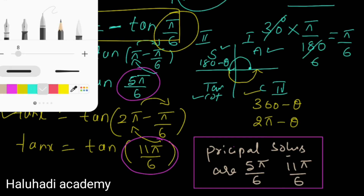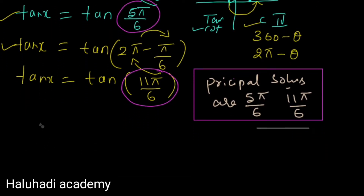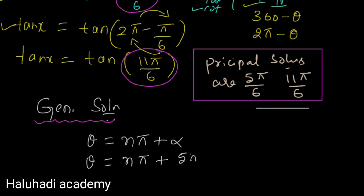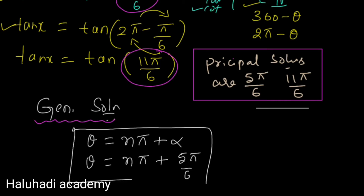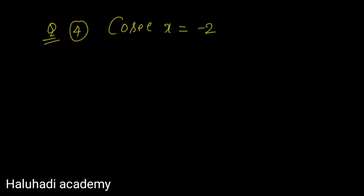Now we find the general solution. For the tan function, the formula is theta equals n*pi plus alpha. Here alpha is the principal solution value. Among the principal solutions we take the smaller one, which is 5pi by 6. So the general solution is theta equals n*pi plus 5pi by 6. This is the general solution of the given function.